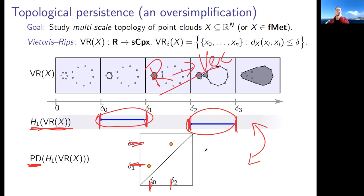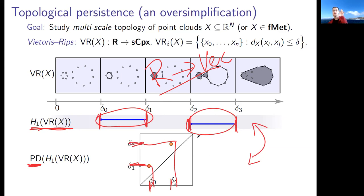The fact that there are two bars in H_1 tells you the data has two holes, but they occur at different scales and cannot be directly compared. You can see this in the persistence diagram — and that is useful information about the multi-scale structure of the data.